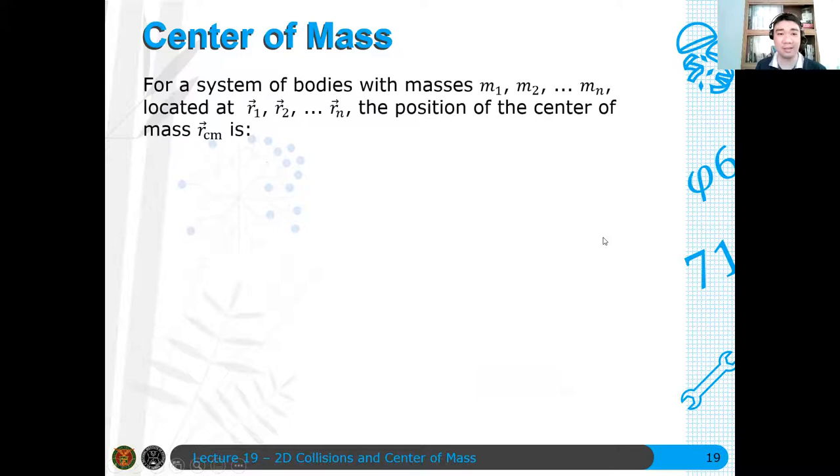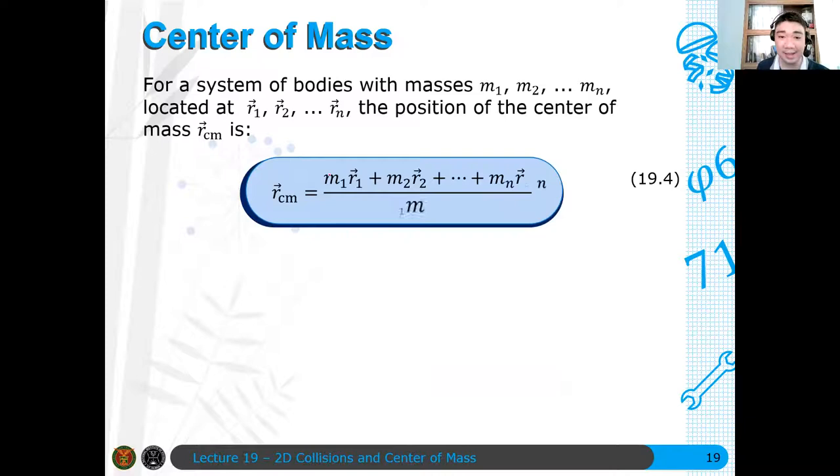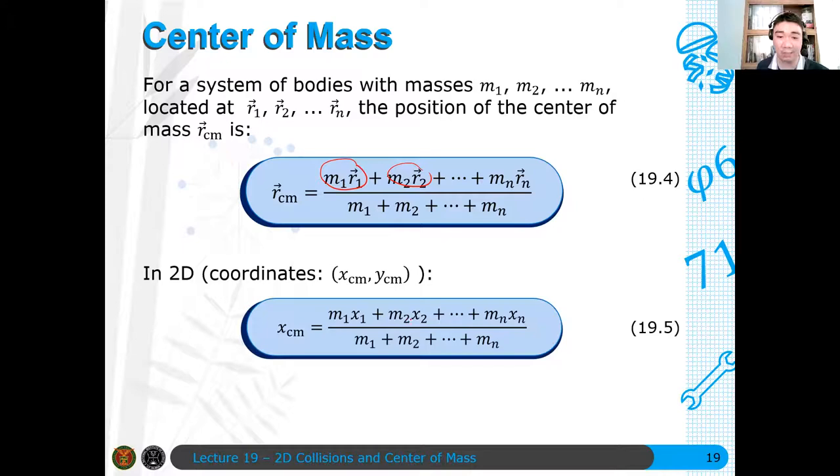For a system of bodies with masses m₁, m₂ up to mₙ, located at r₁, r₂ up to rₙ where r denotes the position vector, the position of the center of mass is given by: you multiply the mass with the position vector and add each of them. So m₁r₁ plus m₂r₂ plus and so on, divided by the total mass of the system. In 2D coordinates such as x and y, we write this as m₁x₁ plus m₂x₂ and so on, divided by m₁ plus m₂ plus mₙ.